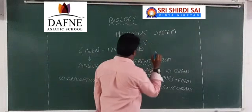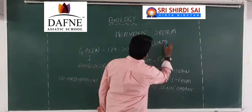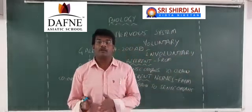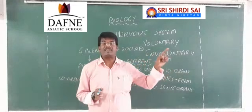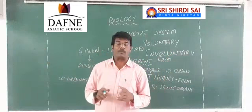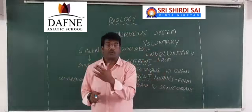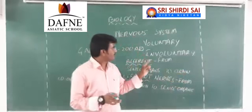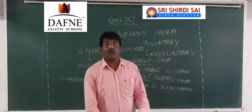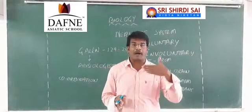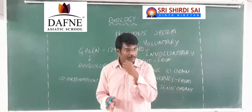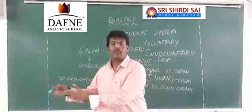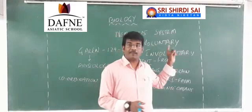Children, we have already learned about involuntary and voluntary functions in previous classes, related to striated muscles and spindle-shaped involuntary muscles. Striated muscles are termed voluntary muscles. Voluntary, as the name implies, means actions performed by the organism according to its own wish. For example, I want to run — running is a voluntary action. Whenever I want to run, I run; whenever I want to stop, I stop. That is a voluntary action.